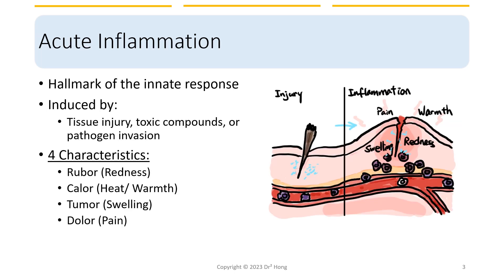Acute inflammation is the hallmark of innate immune response, and it is usually induced by tissue injuries, some type of toxic compounds, or pathogen invasion. There are four characteristics associated with acute inflammation: ruber, calor, tumor, and dolor — which means redness, heat or warmth, swelling, and pain.